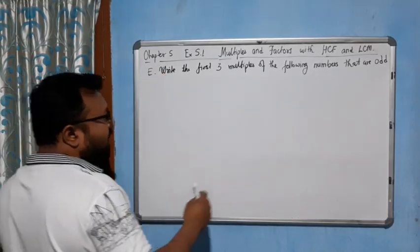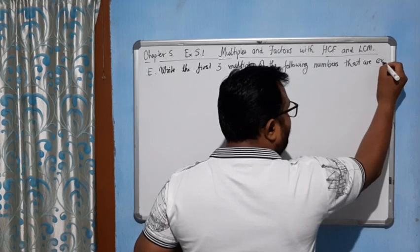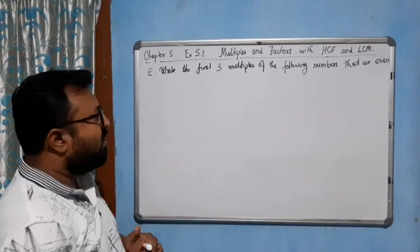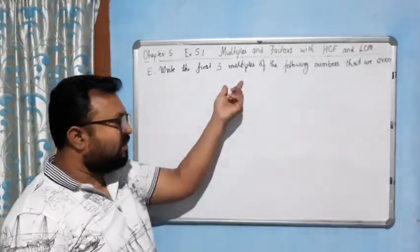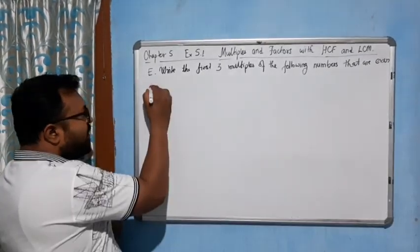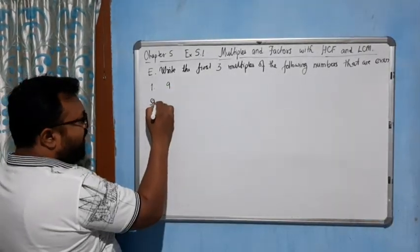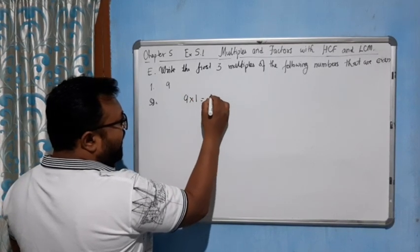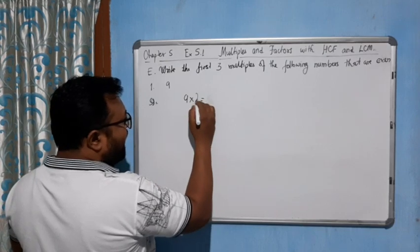In the next question we are asked to find the first three multiples of numbers that are even, so the result, the product, should be even number. Let's see, first we have 9. If we multiply 9 into 1 gives you 9, it's an odd number, so we will not take this number.